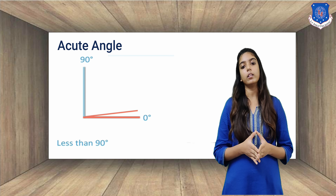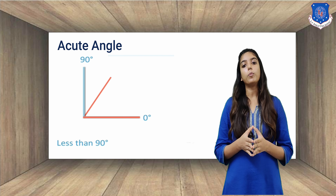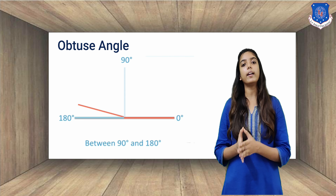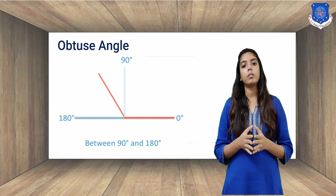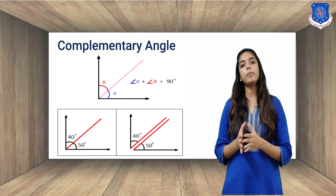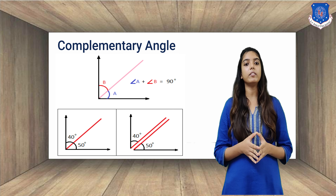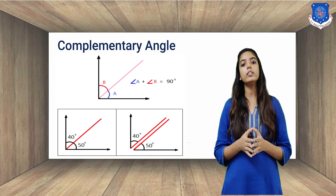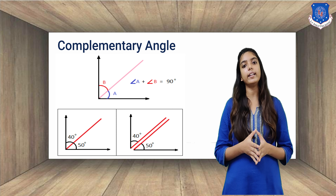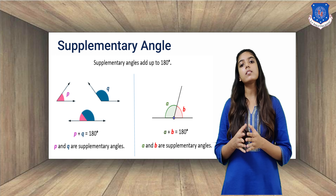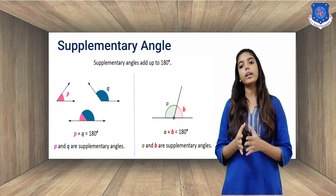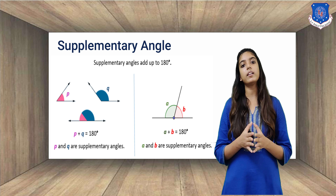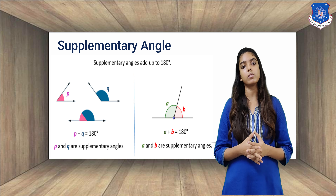What is an obtuse angle? An obtuse angle measures more than 90 degrees. What is a supplementary angle? When the total of two angles is 180 degrees, then they are called supplementary angles.